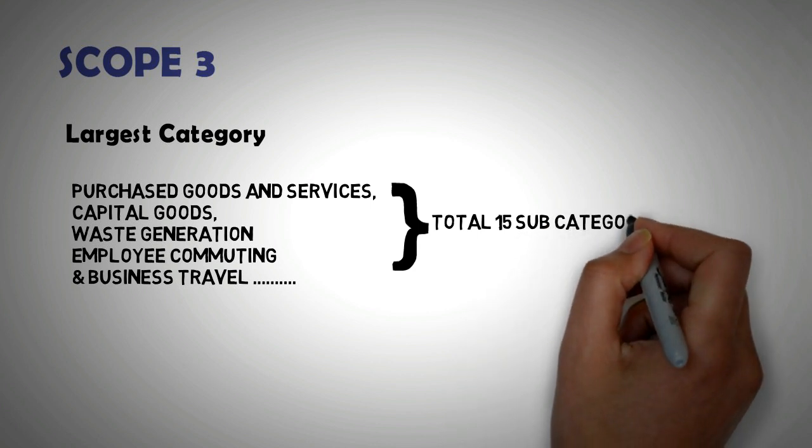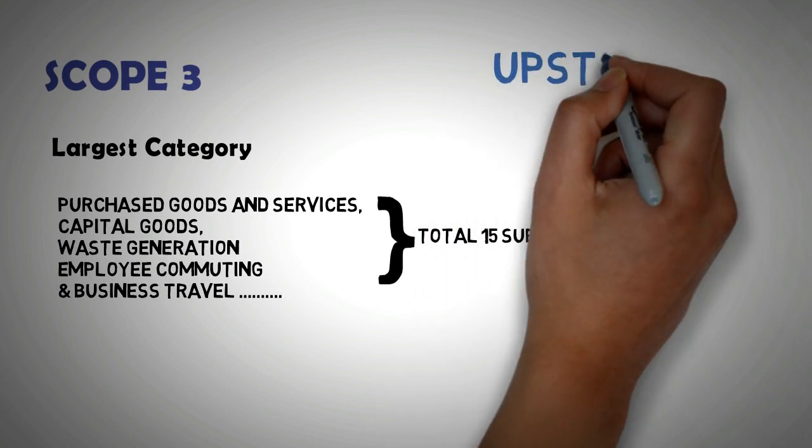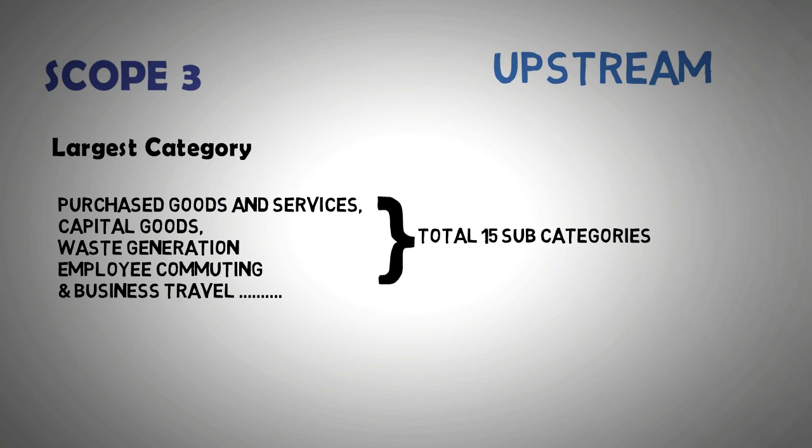For the sake of simplification, we divide Scope 3 emissions into two categories, namely upstream and downstream emissions.